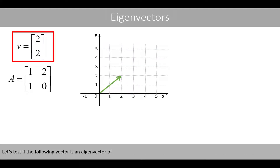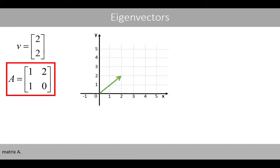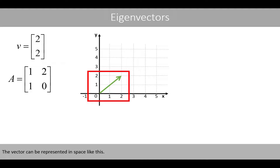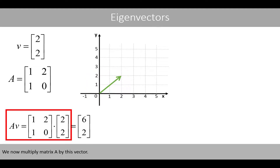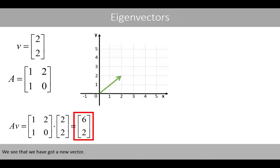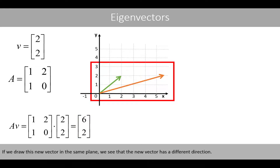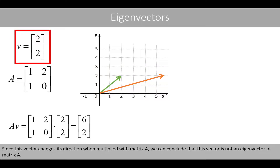Let's test if the following vector is an eigenvector of matrix A. The vector can be represented in space like this. We now multiply matrix A by this vector, and we see that we have got a new vector. If we draw this new vector in the same plane, we see that the new vector has a different direction. Since this vector changes its direction when multiplied with matrix A, we can conclude that this vector is not an eigenvector of matrix A.